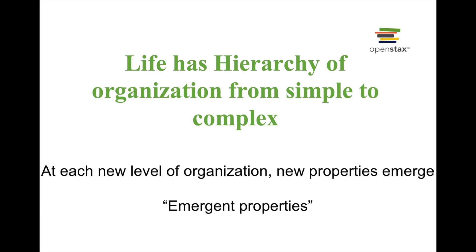Life has a hierarchy of organization which can go from very simple to complex. One very interesting property of life that scientists have observed is that as you go from simpler to more complex levels of organization, at each level new properties emerge — a concept called emergent properties. In everyday language, we refer to this as the concept that the whole is greater than the sum of its parts.